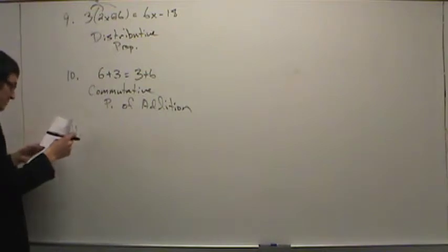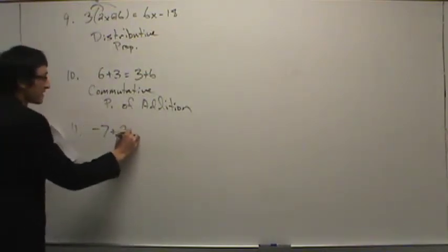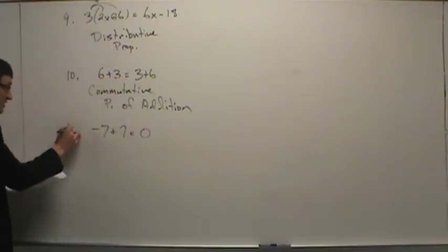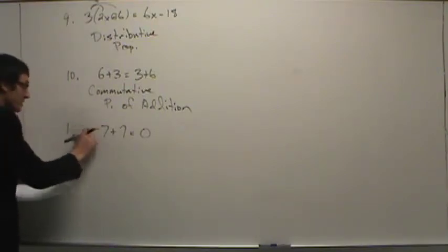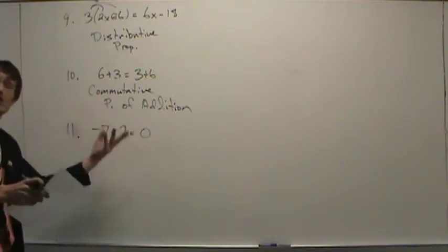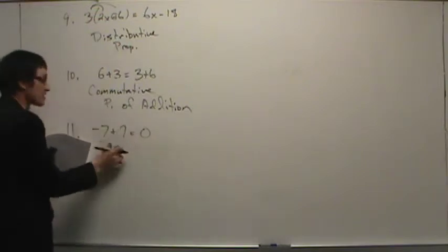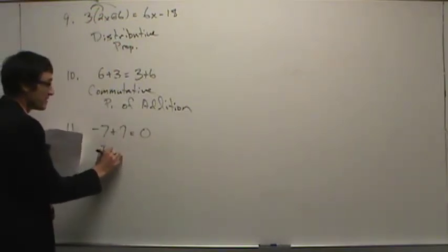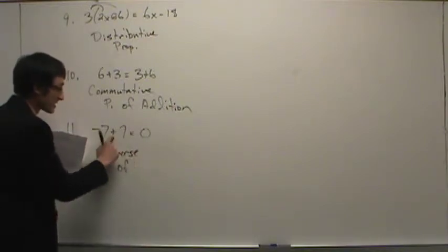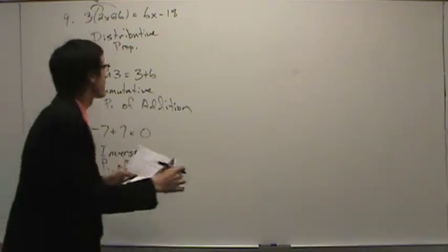Number eleven says negative seven plus seven equals zero. Ones and zeros give a clue that you're looking at either identity or inverse. Did you start with negative seven and end with negative seven? No. So this is not identity — this is the inverse property of addition.